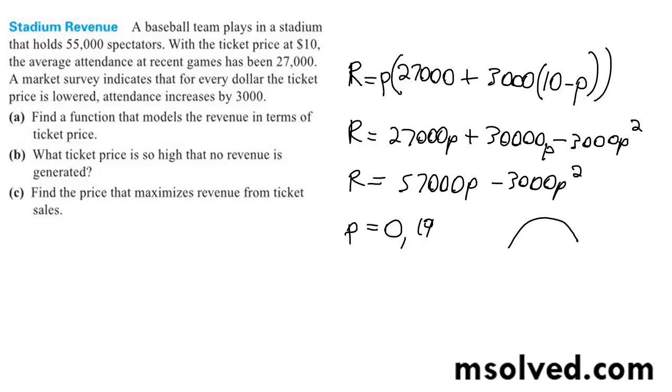And for the function, the ideal price point for the maximum revenue is going to be P is equal to negative B over 2A.